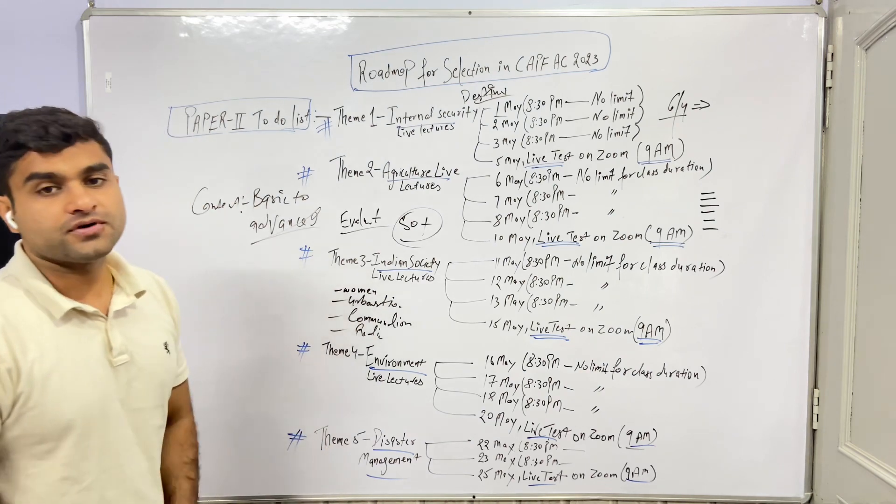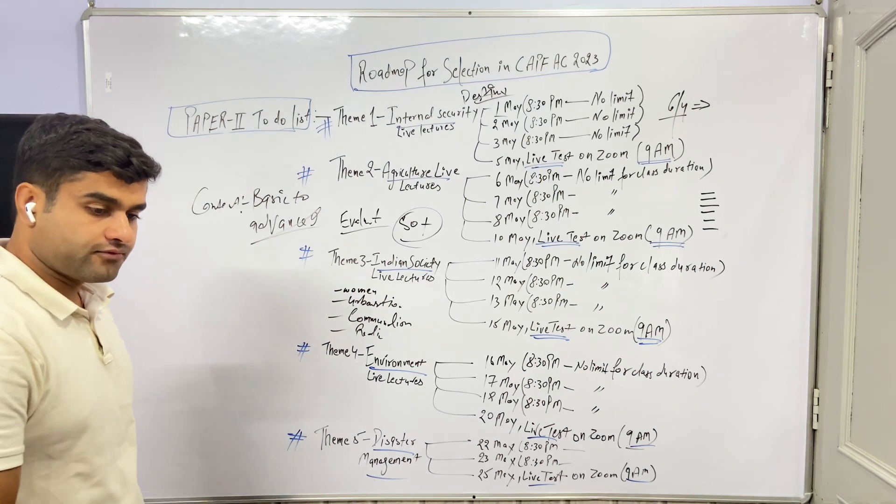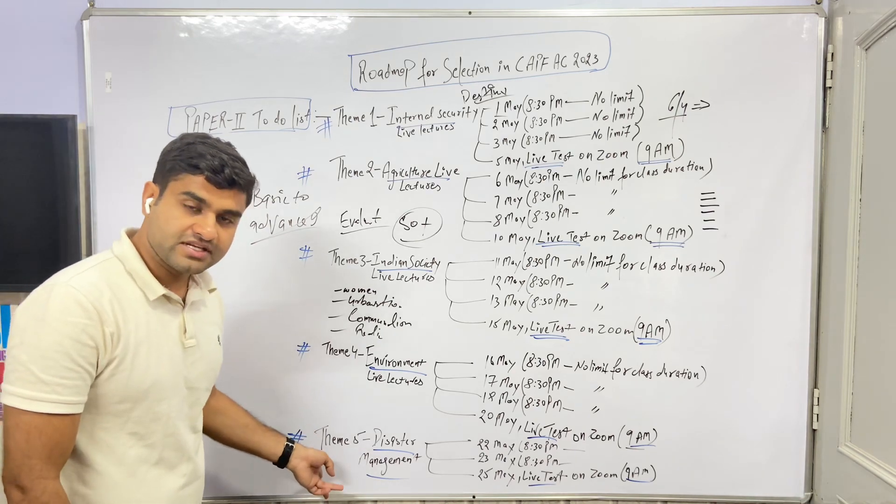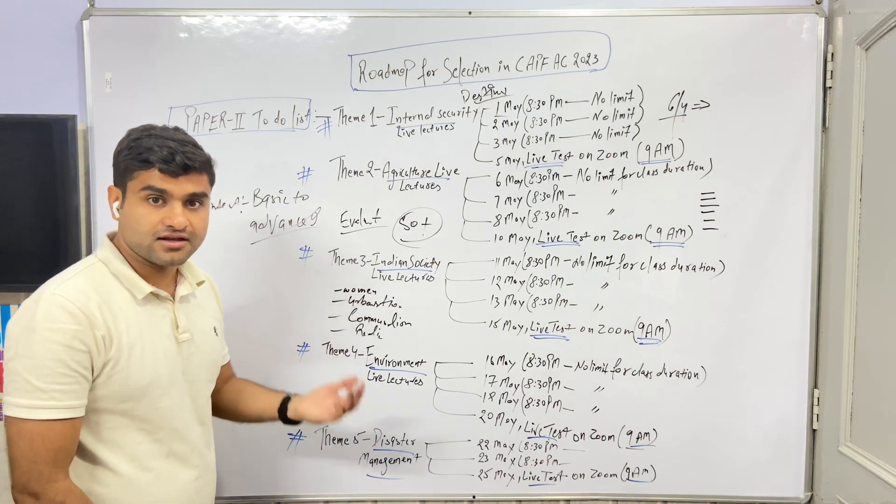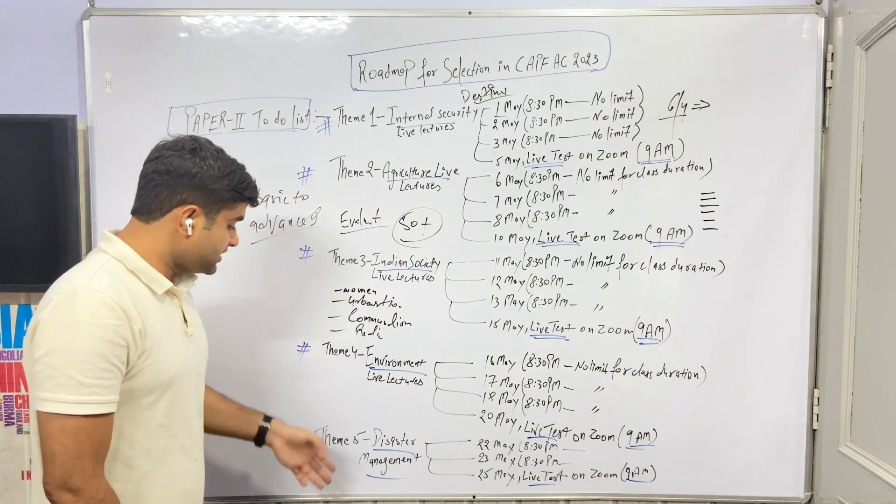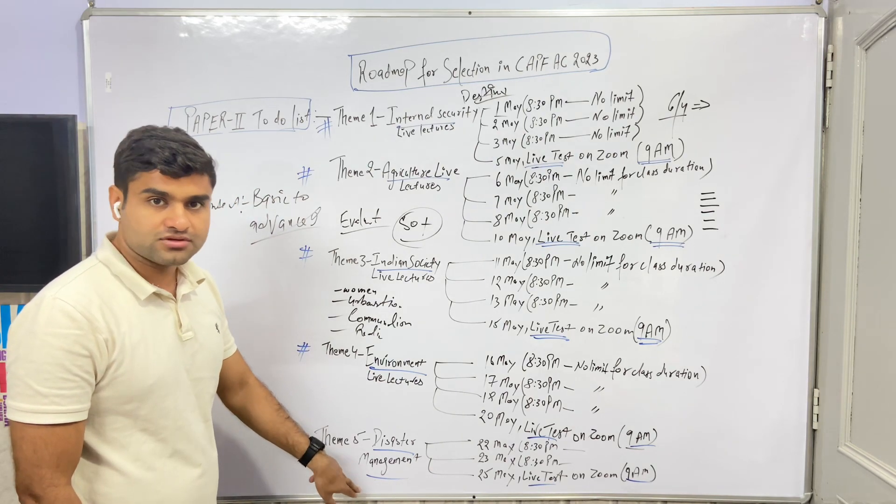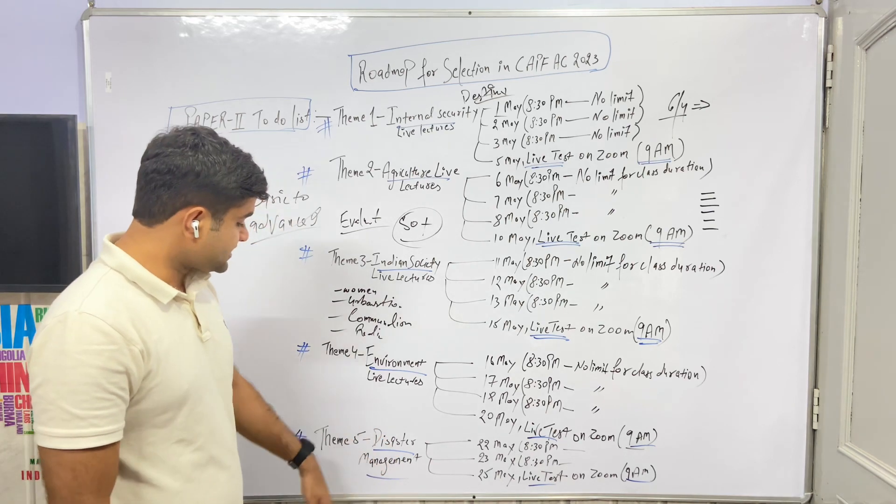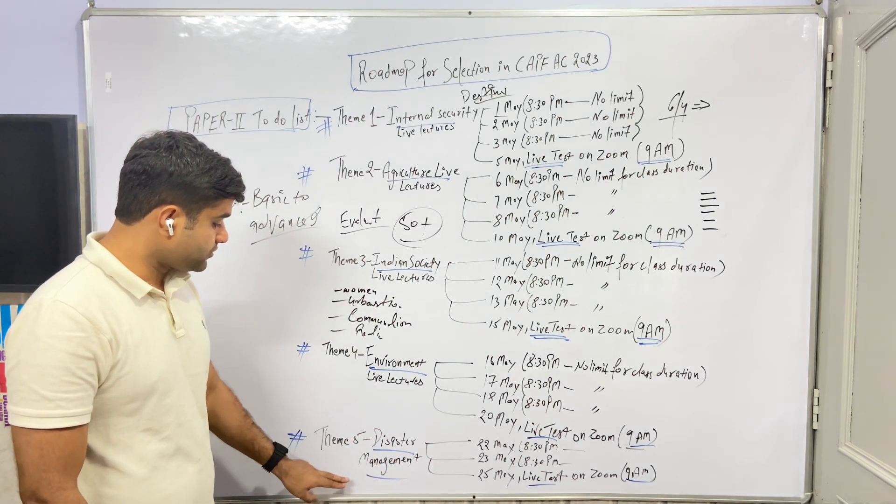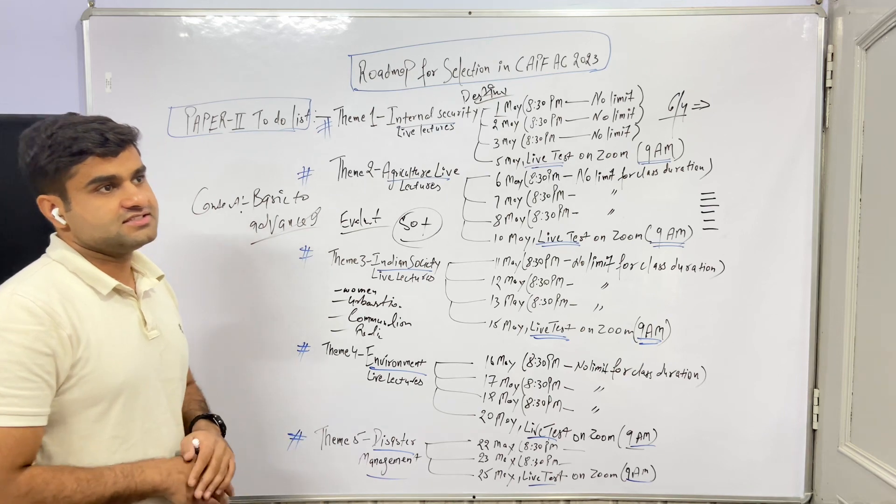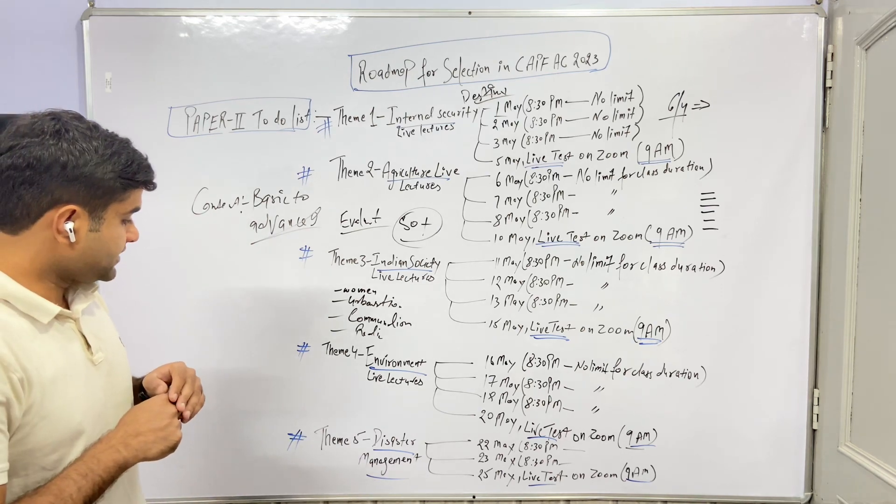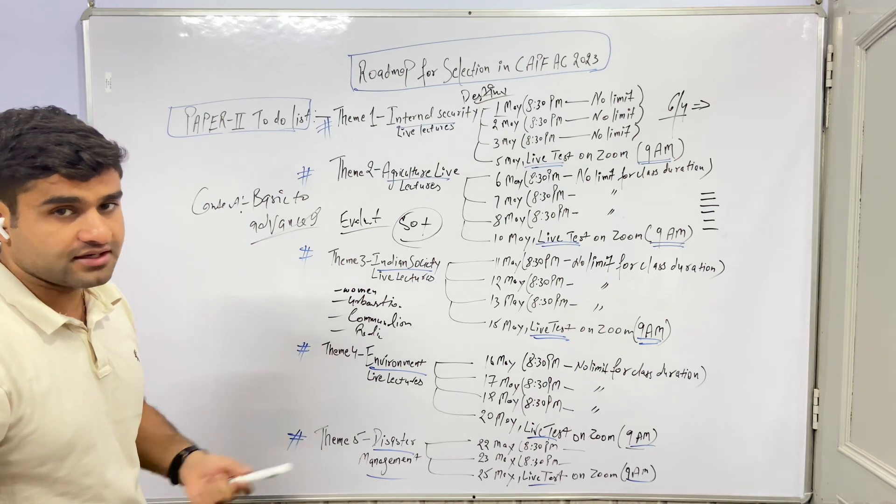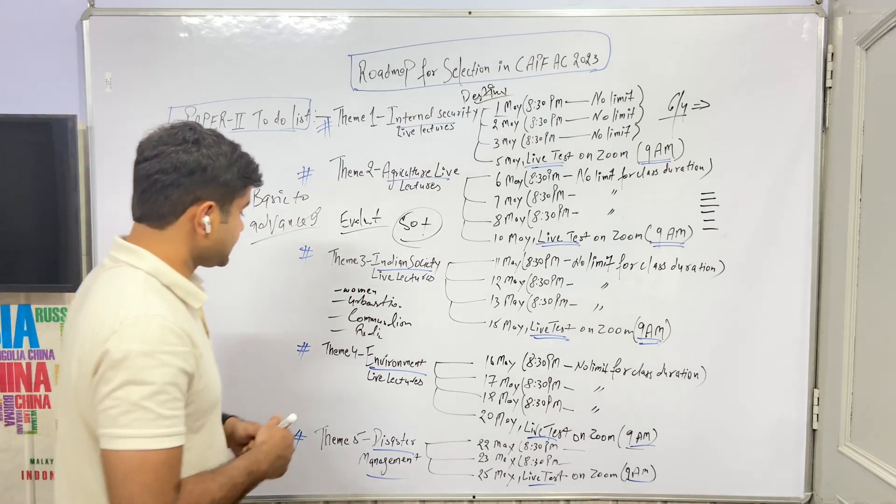Disaster management is again important. India faces a lot of floods: Morbi Bridge collapse, Turkey, Pakistan flood, Kerala disasters. Train collisions, road accidents. So there is high probability disaster management will be asked. There is a rise in road accidents in India - this question type.